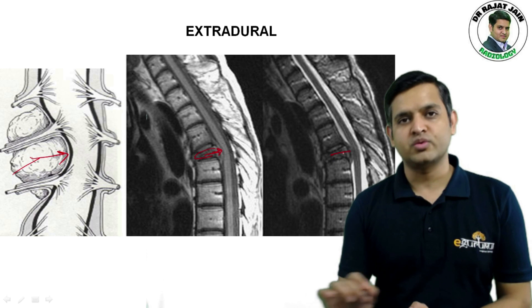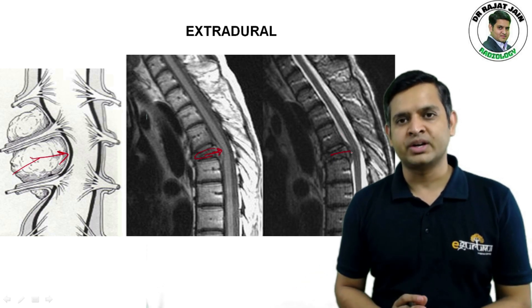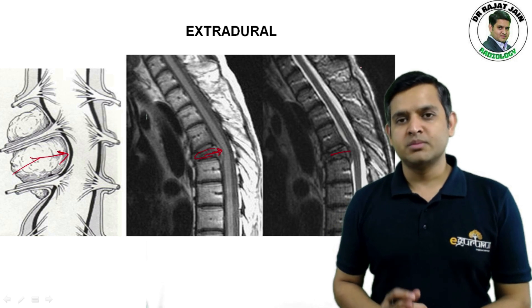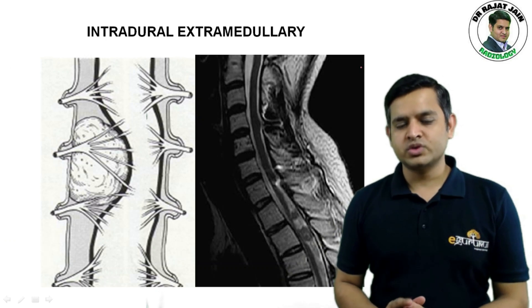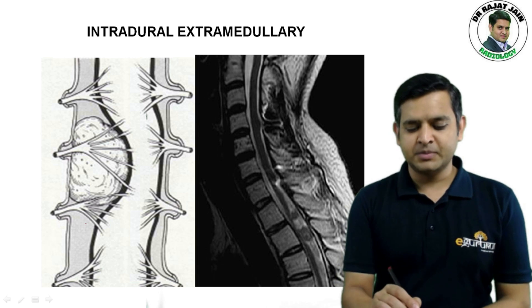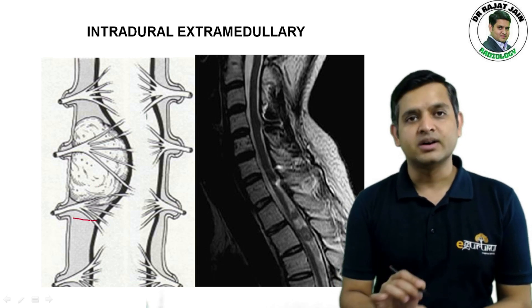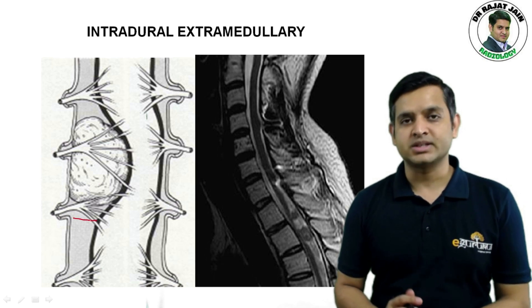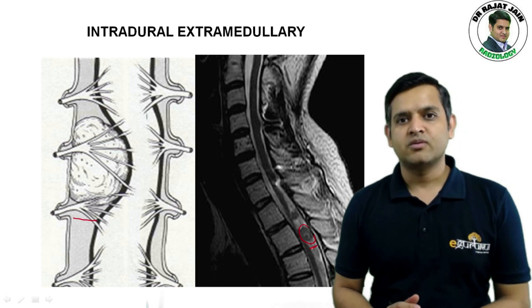This is very well seen on this T2 weighted MRI where the ventral thecal sac is obliterated. It is to be noted that the most common extra-dural mass is metastasis. An intradural extra-medullary tumor is present in the subarachnoid space and causes widening of the subarachnoid space, which is very well depicted here.